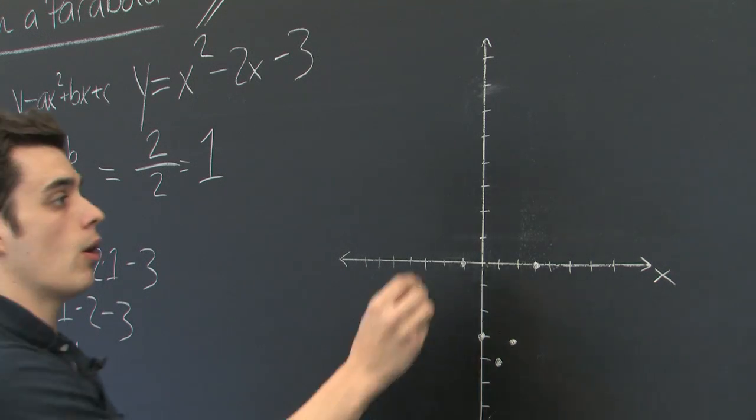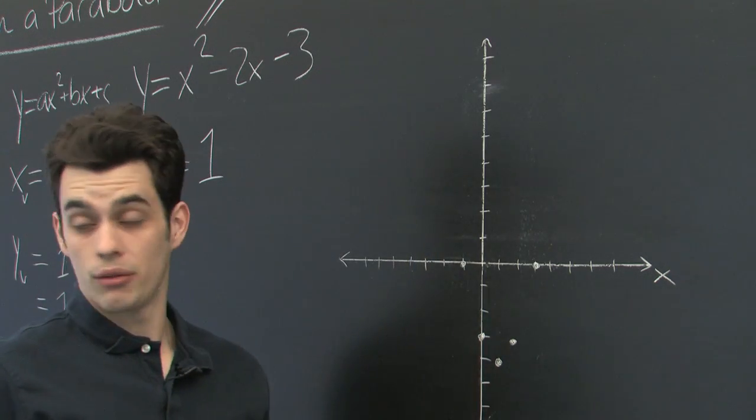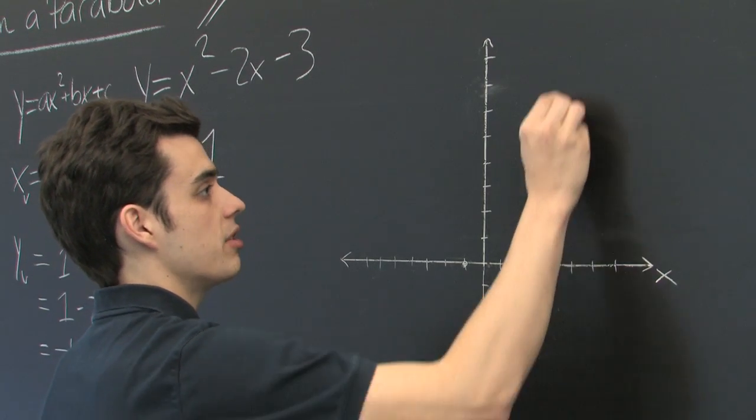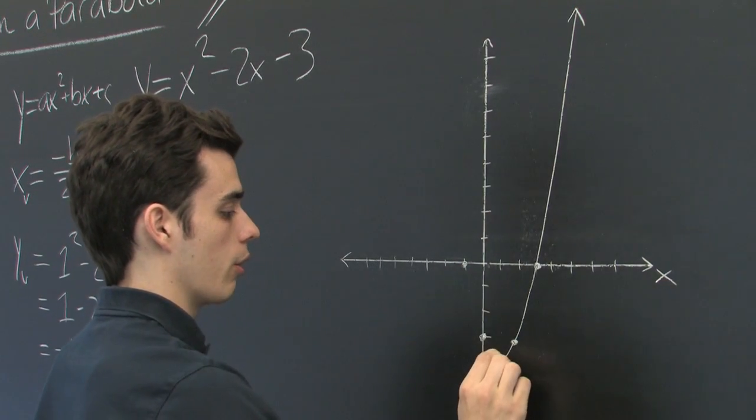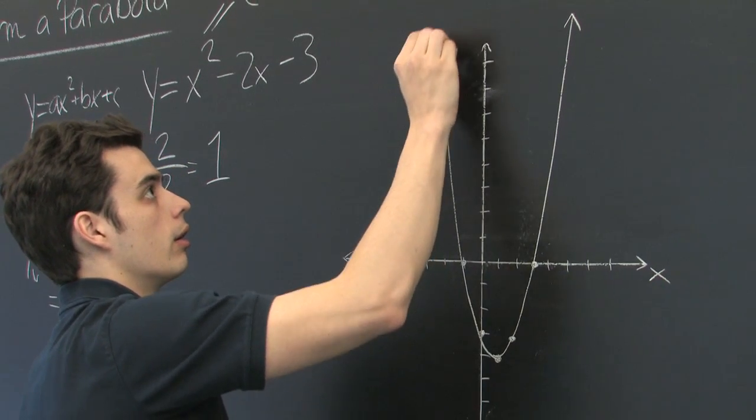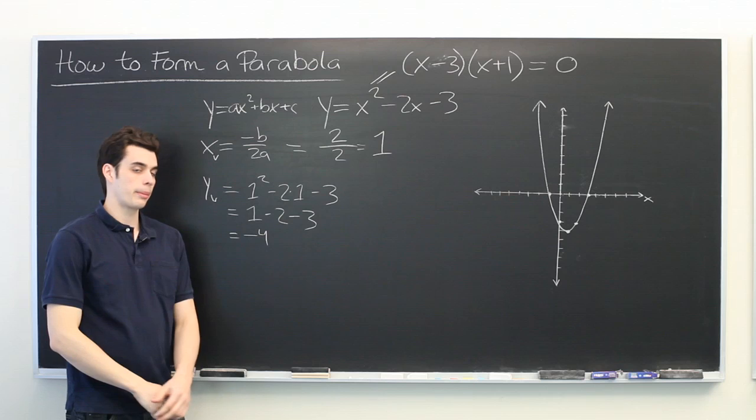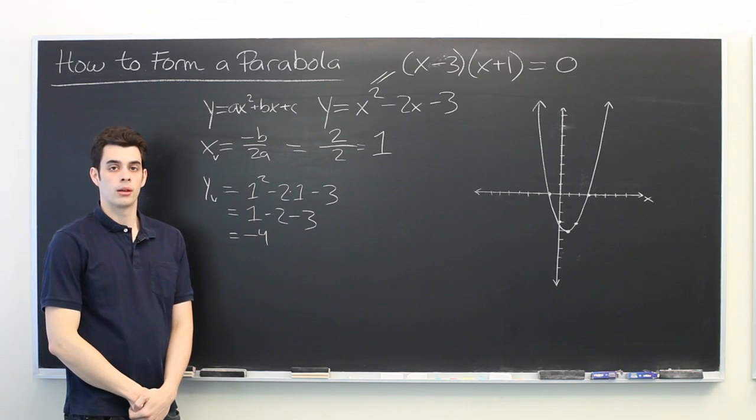And from here, we can always add more points above the x axis if you want to, but for now, we'll simply connect the points that we have with a smooth curve. And there we have our parabola. My name is Ryan Malloy, and we've just discussed how to form a parabola.